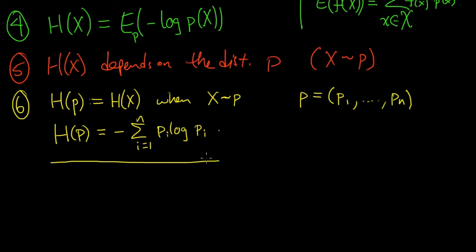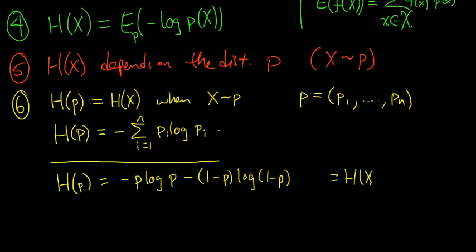And a very similar-looking notation, I'll underline to emphasize that this is different. Sometimes we write h of p to be the entropy of a random variable x that takes the value 0 or 1 with probability, so it takes the value 1 with probability p. It's a Bernoulli random variable. So sometimes we write this to mean minus p log p minus (1-p) log (1-p).